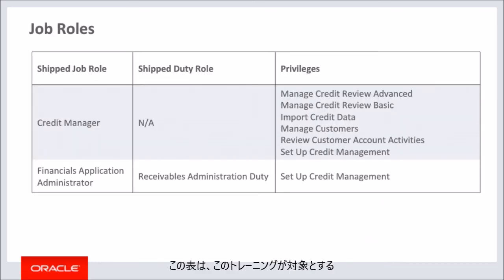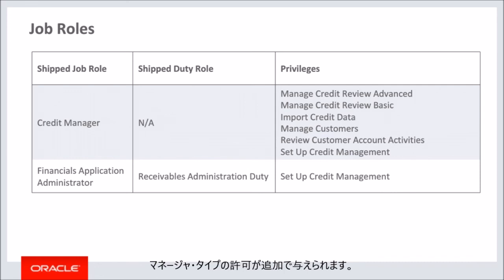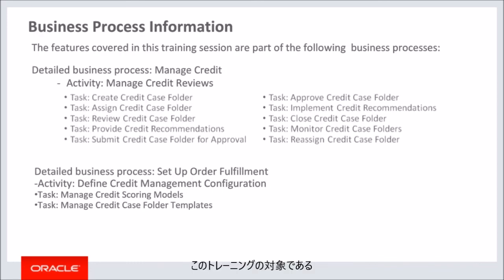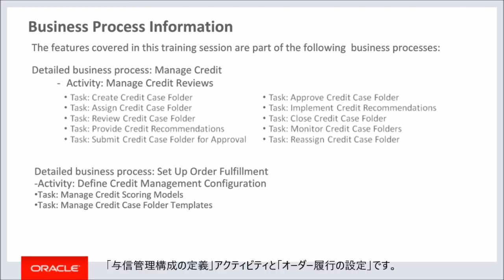This table details the shipped job roles that will access the new features covered in this training. The manage credit review advanced privilege gives additional manager-type permissions such as reassigning and manually closing someone else's case folders and approving case folders submitted by someone else. If you would like to separate out these advanced capabilities, you will need to create customized roles with the selected privileges. The high-level business process is manage credit with the activity manage credit reviews, and the other business process is set up order fulfillment with activity define credit management configuration.